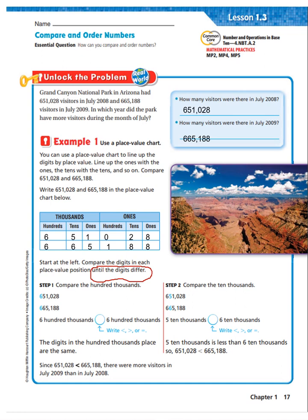So, let's start with step one. We're going to compare the sixes in 651,028 and 665,188. Well, in the hundred thousand spots, they're the same. They're equal. So we're going to put an equal to sign here because they're both 600,000.